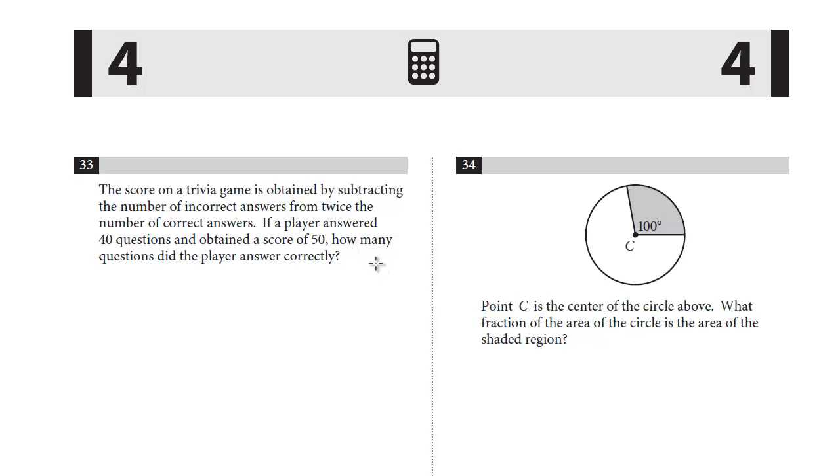This is systems of equations. We have two separate equations. Start with the total number of answers: C + I = 40. That's our first equation, just the total number of questions answered. Now we can use the one with the coefficient. The score is obtained by subtracting the number of incorrect from twice the correct: 2C - I = 50. So here are the two equations.